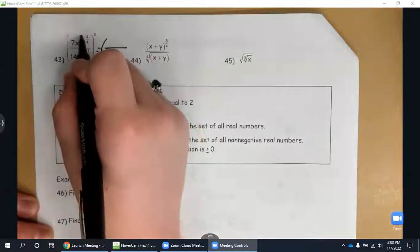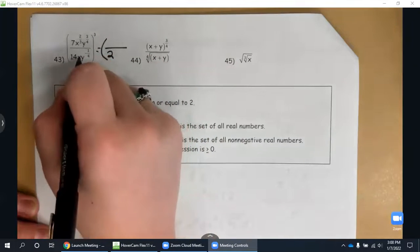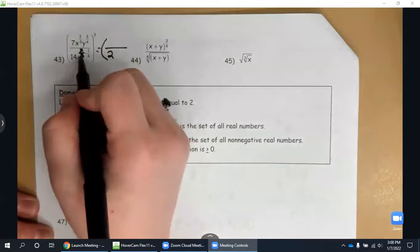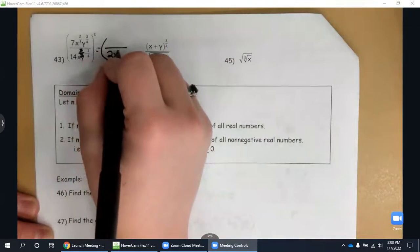X to the two-thirds, this is x to the one, which I can write as three over three. So three over three minus two over three leaves me with x to the one-third.